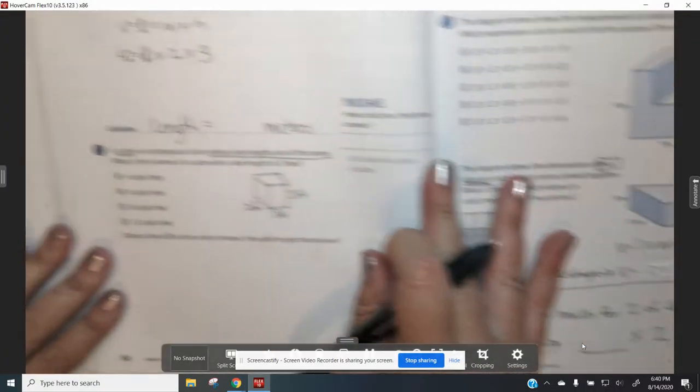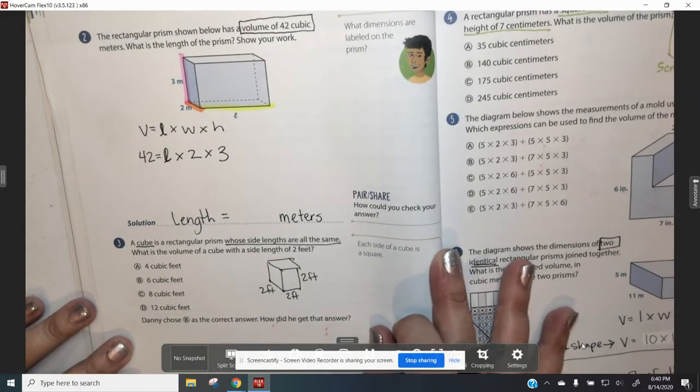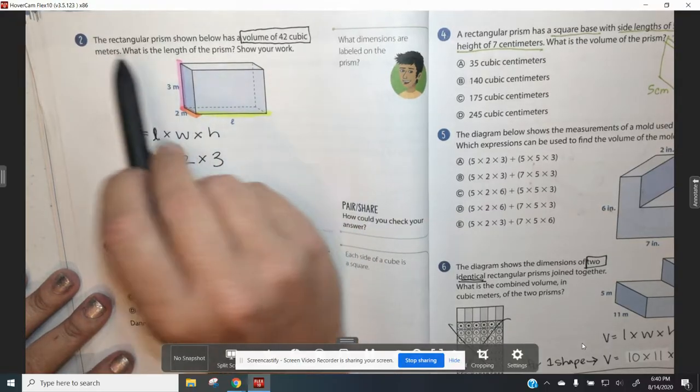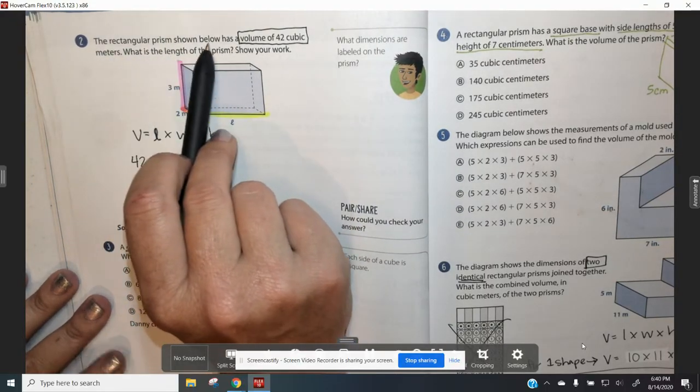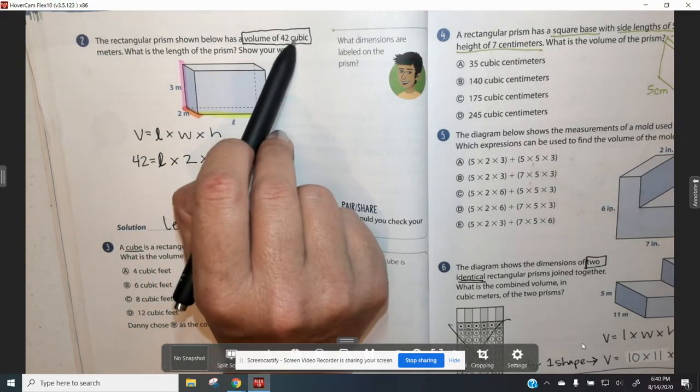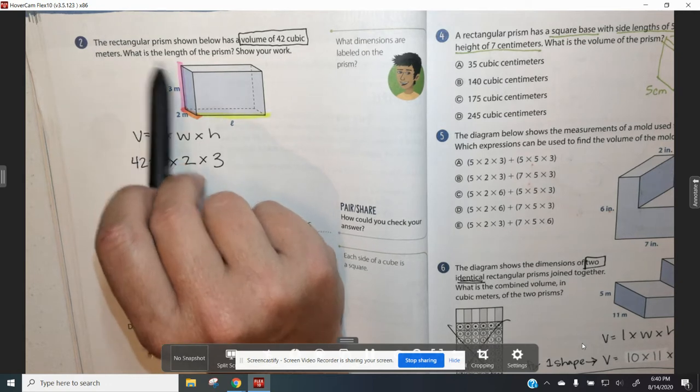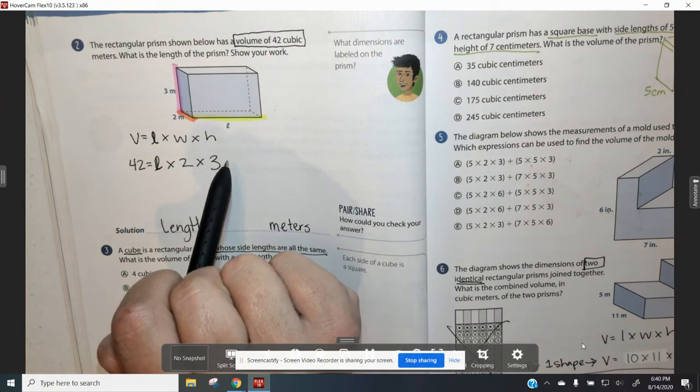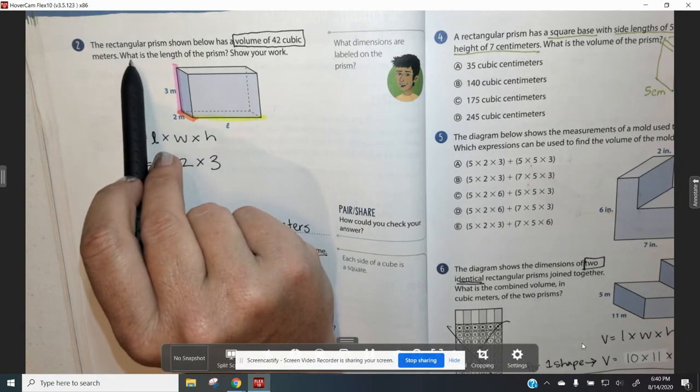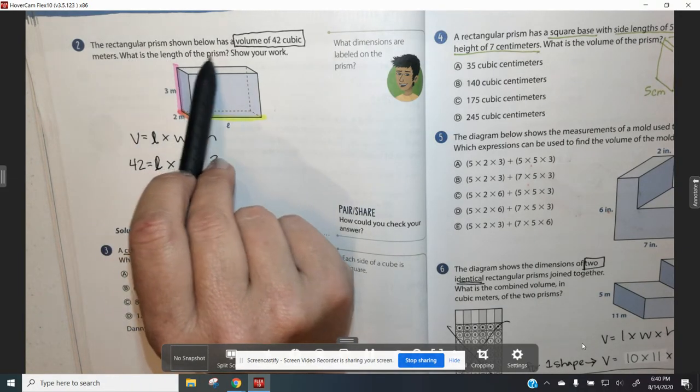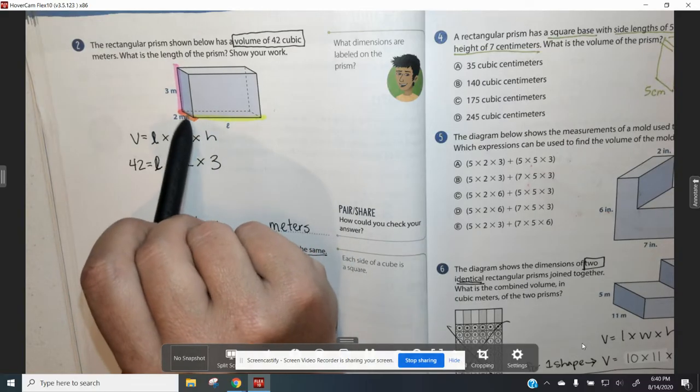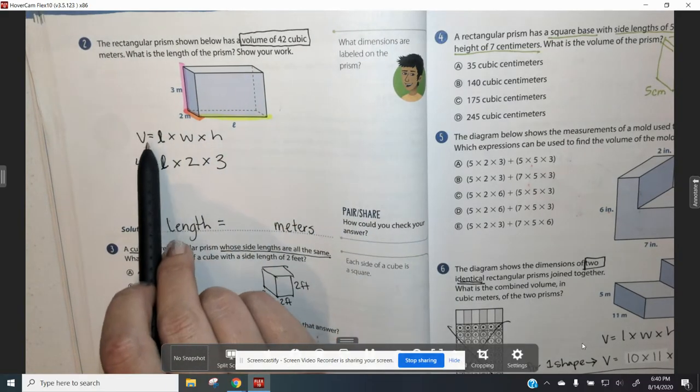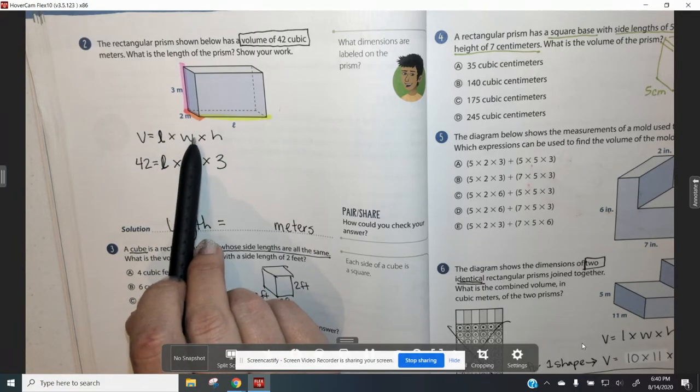Number 2 is something that we haven't seen yet, but I have total faith that you can do it. The rectangular prism shown below has a volume of 42 cubic meters. That means they're telling us how much this rectangular prism holds. That's not what we're trying to find out right now. We're trying to find out what is the length of the prism. We know our width, we know our height, but we don't know our length.